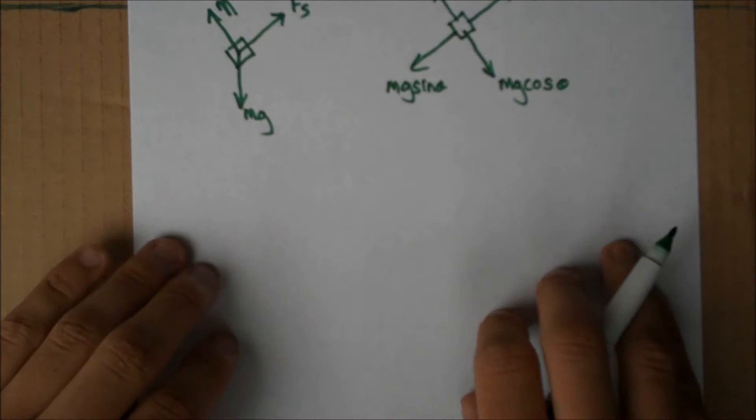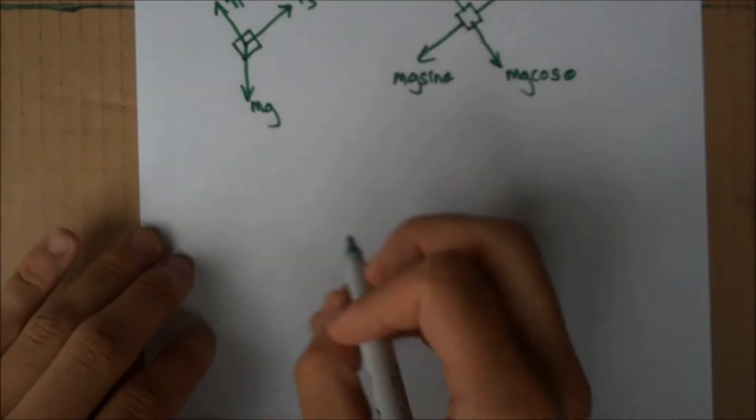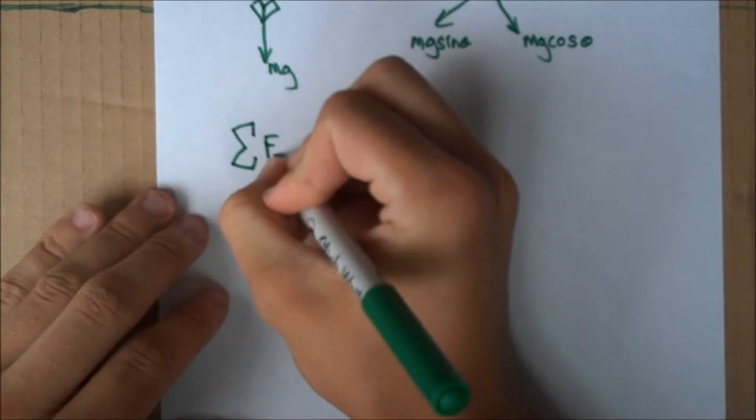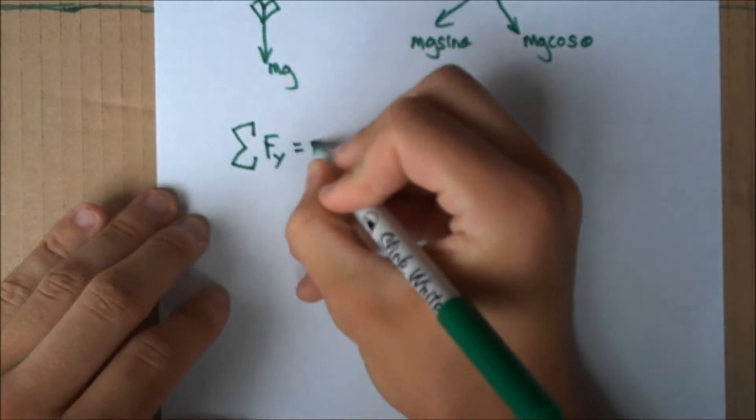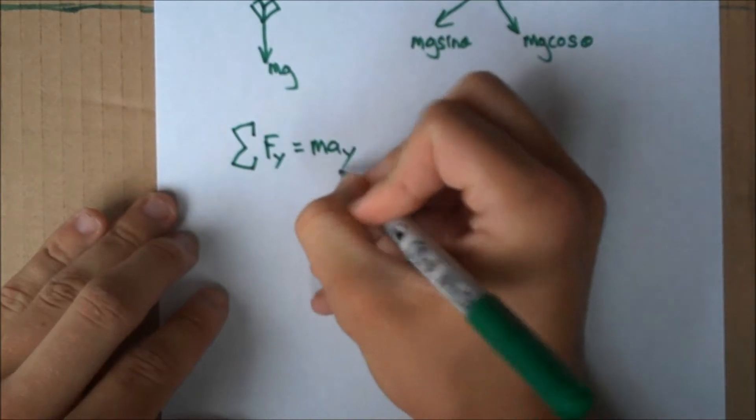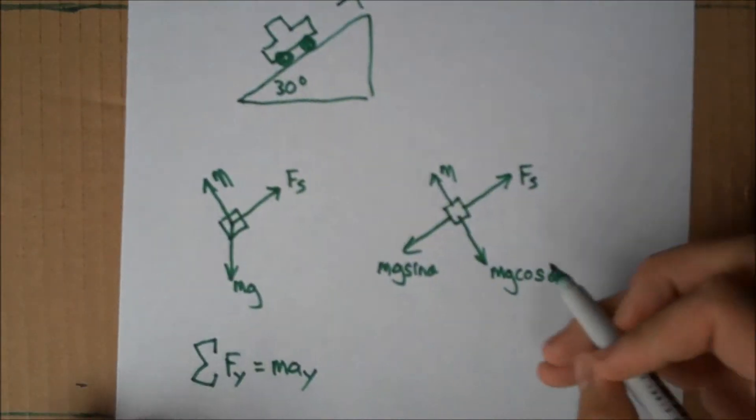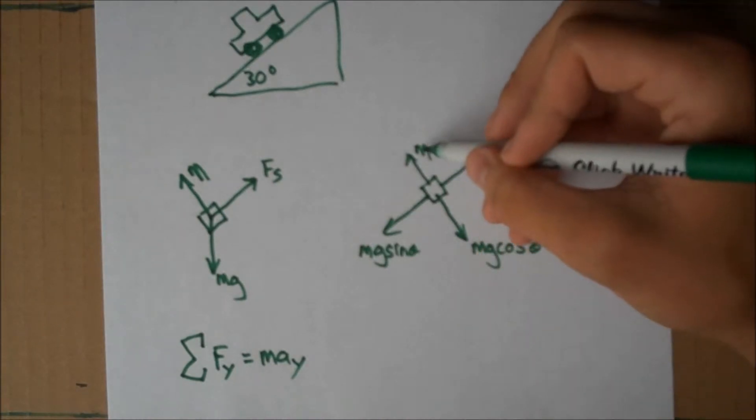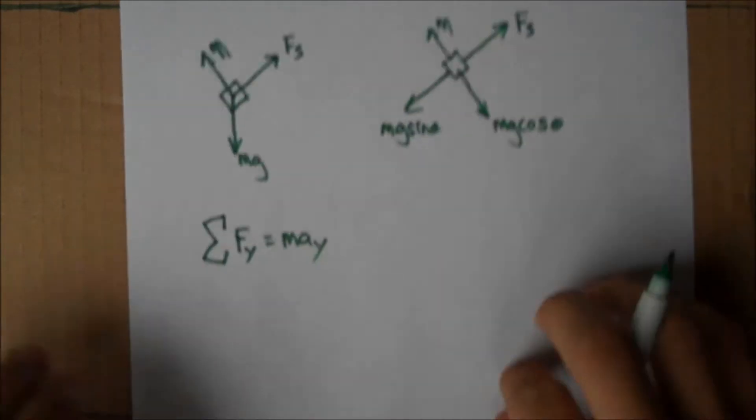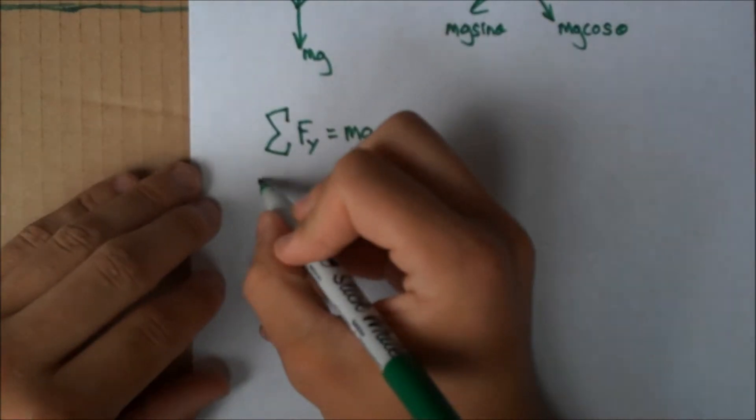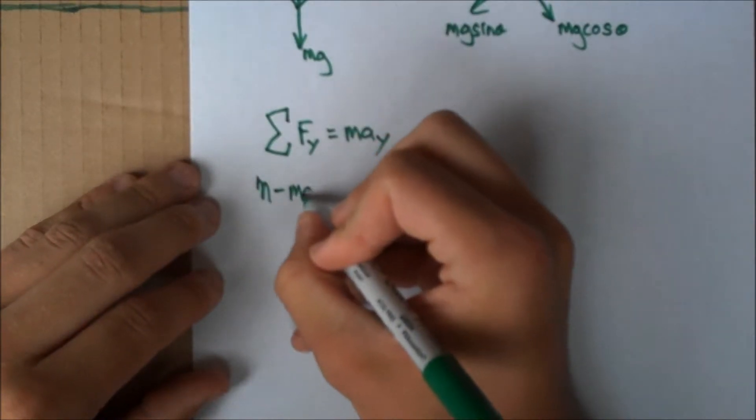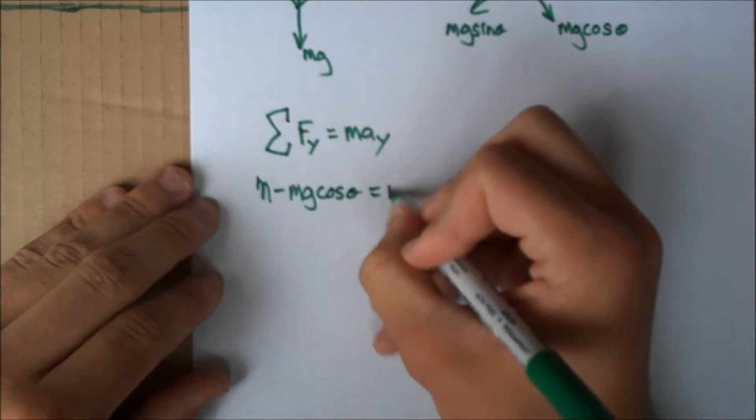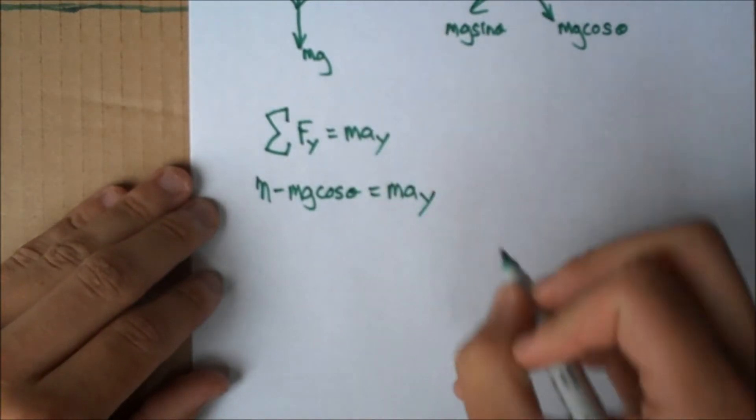To find the normal force, we need to write the appropriate Newton's laws. We want to write the sum of the forces in the Y direction equals M times A_Y. If we go back to our free body diagrams, we can see in our Y direction that we have normal force and Mg cos theta. So we'll have normal force minus Mg cos theta equals M times A_Y.